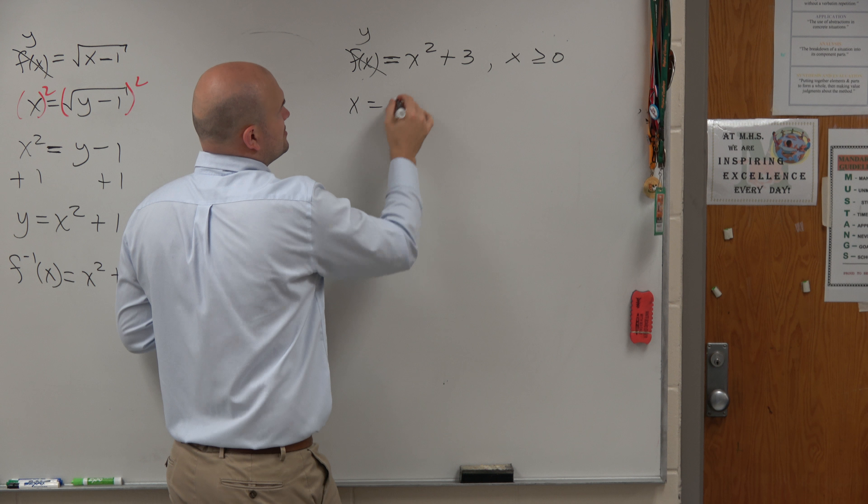Now remember, guys — when we introduce the square root, you have to use plus or minus on your test. So y equals plus or minus the square root of x minus 3. However, my restriction says x has to be greater than or equal to 0. So should I include plus and minus, or should I just include the positive?